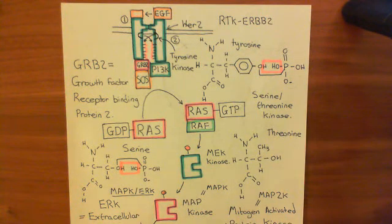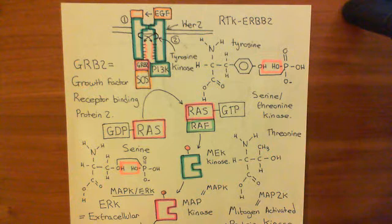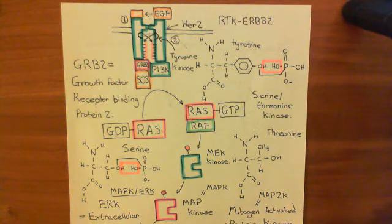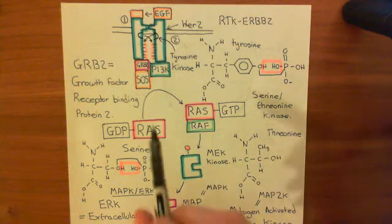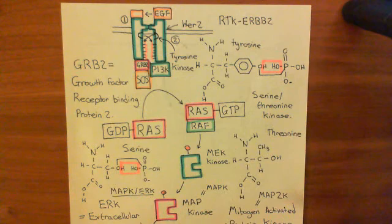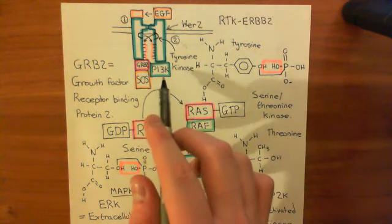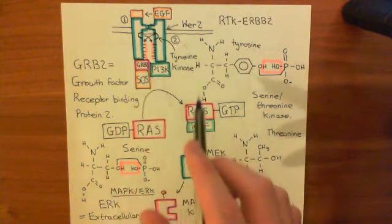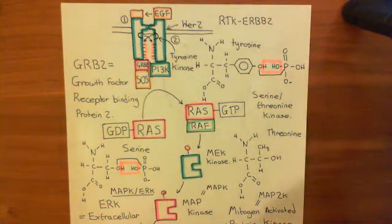Welcome back to this next video in which we're discussing the human epidermal growth factor receptor 2 and how amplification in that receptor can lead to breast carcinoma. So far we've looked at the MAP kinase ERK pathway, which is a downstream signaling pathway of the HER2 receptor. Now what we want to look at is the role of this PI3 kinase enzyme and how that's going to activate the PI3 kinase AKT mTOR pathway.